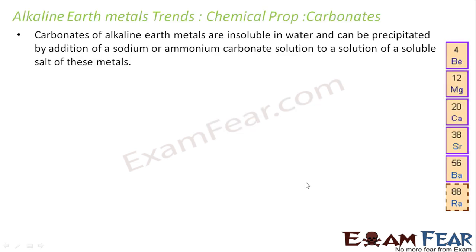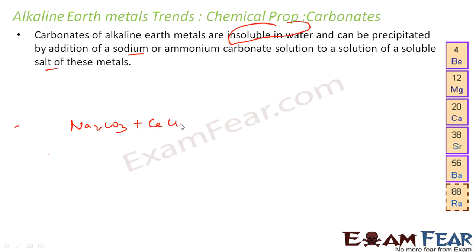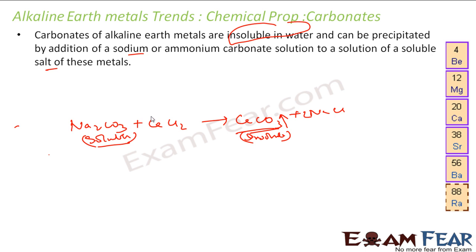Let's talk about the trends of the carbonates. The carbonates of the alkaline earth metals are generally insoluble in water, and they can easily be precipitated by adding a soluble carbonate salt. For example, sodium carbonate is soluble in water; if you add calcium chloride, you get calcium carbonate which is insoluble. The solubility rule states that all carbonates are insoluble except group 1 and ammonium — all others are insoluble. Calcium is group 2, so it is insoluble.